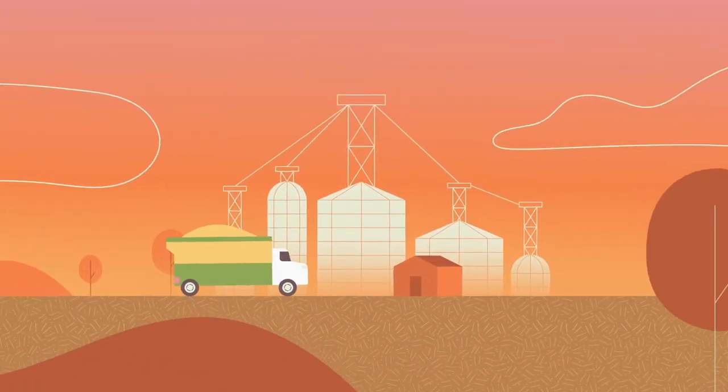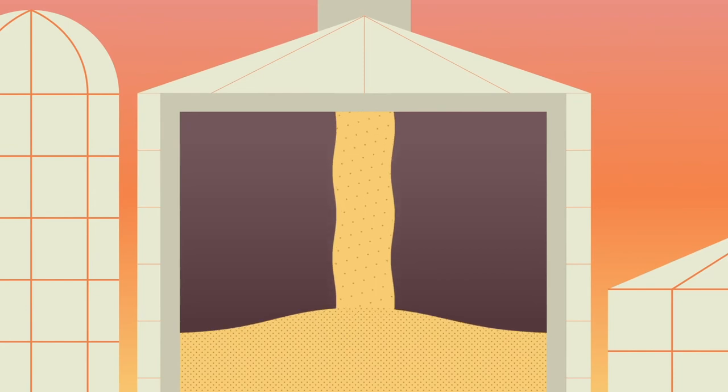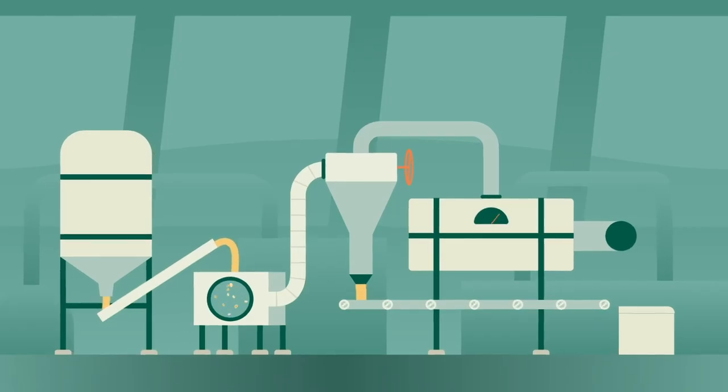The grain elevators store the seeds safely while they search for a processor who will buy them and turn the seeds into oil and meal.